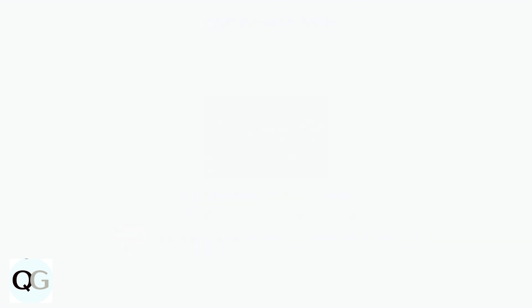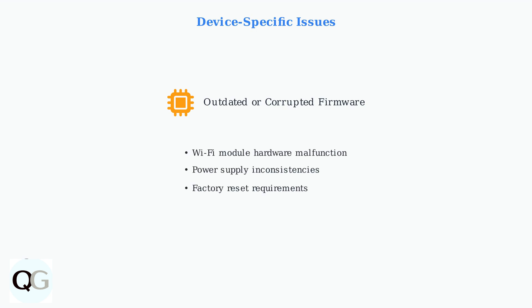Device-specific factors can also prevent connection. Outdated firmware is a common culprit, as manufacturers regularly release updates to improve connectivity and fix bugs. Hardware malfunctions in the camera's Wi-Fi module can also occur, though this is less common. Power supply inconsistencies and the need for factory resets round out the main device-related causes.